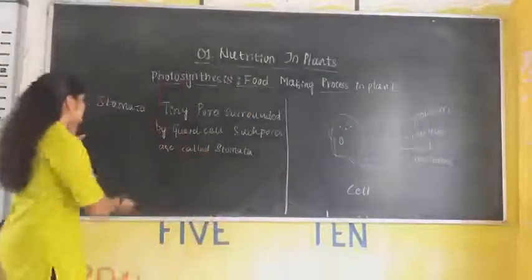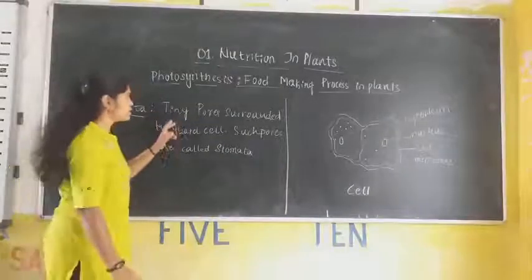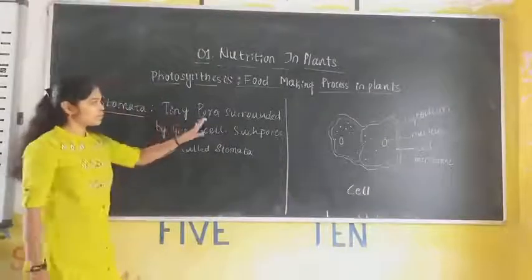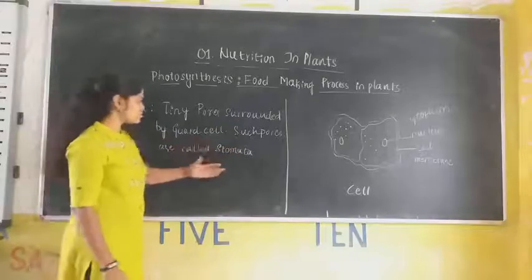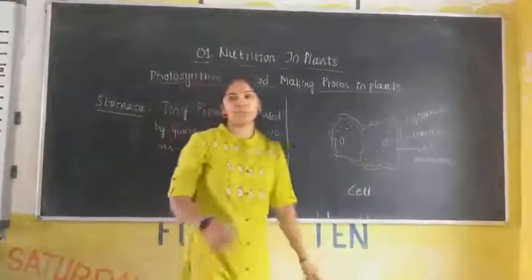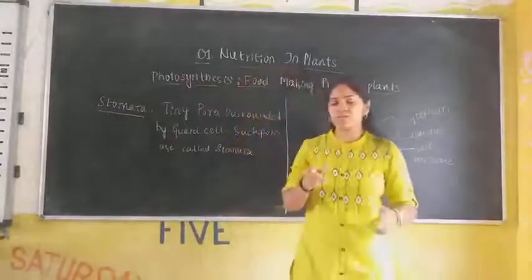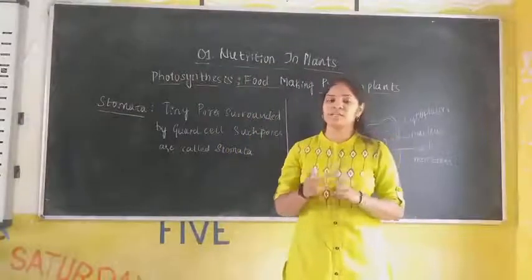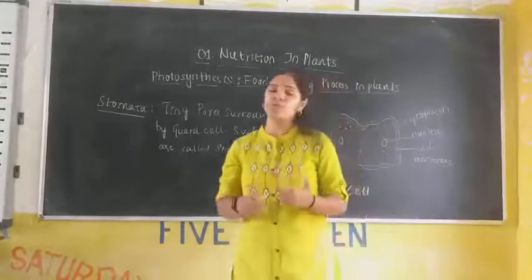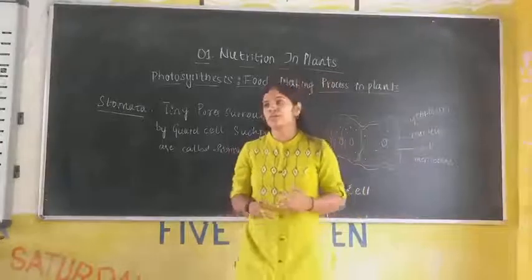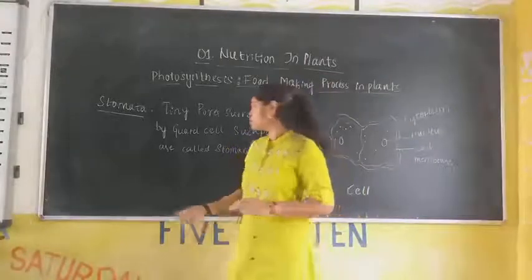Then there is a stomata. The stomata is nothing but tiny pores surrounded by guard cells. Such pores are called stomata. There are some small pores present in the leaves through which the photosynthesis process occurs.